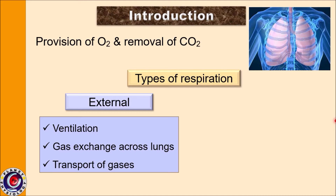External respiration involves gas exchange across the lungs, that is between the lungs and the blood. This process requires ventilation, that is the movement of gases in and out of the lungs, and then transport of these gases from blood to the various tissues. All these are parts of external respiration.